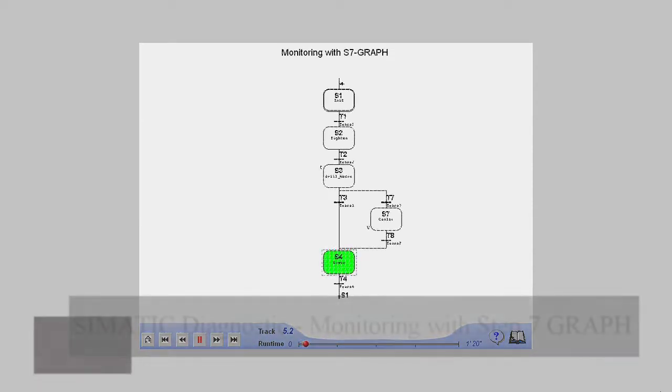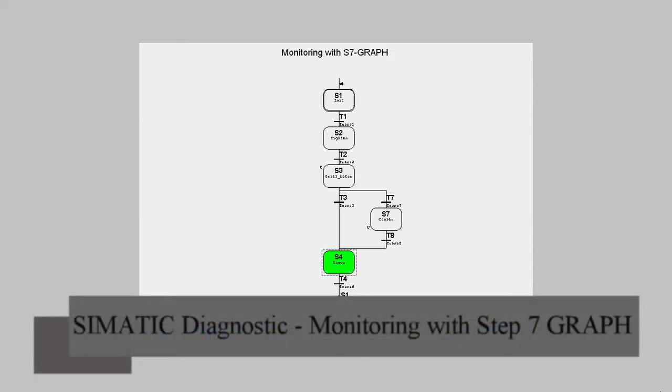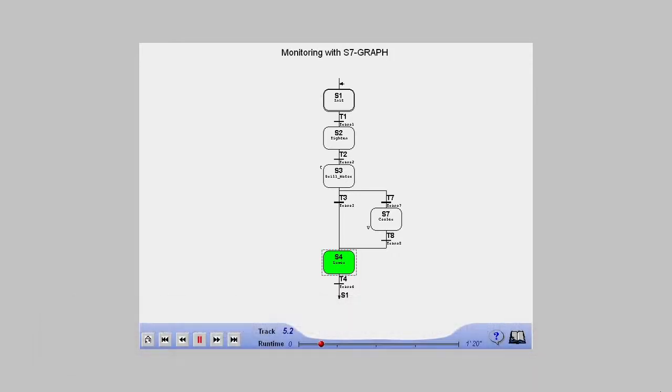With the S7 graph language, the option for process diagnostics is already an integral part of the engineering tool. The possible fault definitions are integrated directly into the sequencer with the S7 graph editor and evaluated permanently by the sequence controller at runtime.